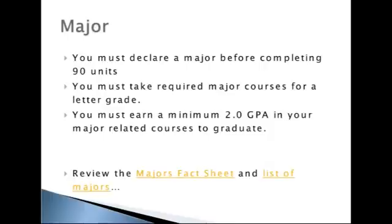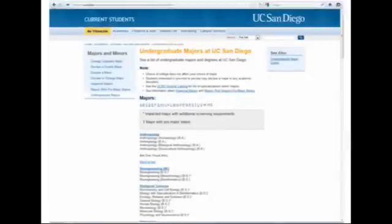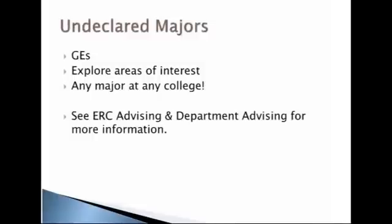You can look up your department's website to find information about their major programs, current course offerings, and department contact information. Review the majors fact sheet for new ERC freshmen and the list of majors for more information on the over 130 majors available at UCSD. If you are undecided, don't worry — your GEs might help you find a major, or maybe your electives will open up new areas of interest.